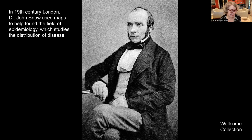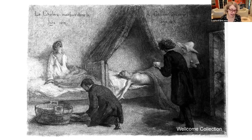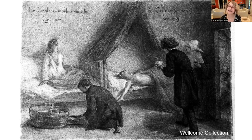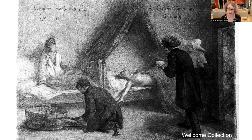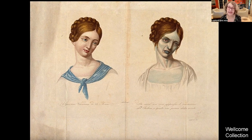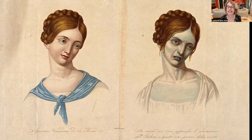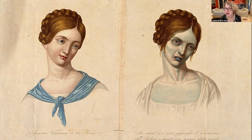In 19th century London, Dr. John Snow used maps to help found the field of epidemiology, which studies how diseases arise and spread. At the time, many scientists believed that cholera was caused by squalid living conditions and the faulty habits of the poor. Dank, crowded spaces were concrete conditions doctors could see. Medical illustrations showed the visible effects of disease — cholera depicted as turning a vibrant young woman into a blue and disheveled ghoul, with a moral undertone linking health with purity and virtue.